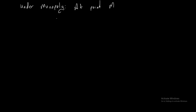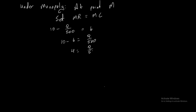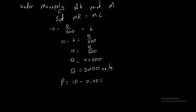For the monopoly at point M, we set marginal revenue equal to marginal cost. MR is 10 minus Q over 500, set equal to MC of 6. So 10 minus 6 equals Q over 500, giving 4 equals Q over 500, so Q equals 4 times 500, which is 2,000 units. With output of 2,000 units, price equals 10 minus 0.001 times 2,000, which equals 10 minus 2, so price equals $8.